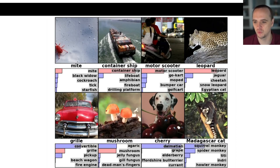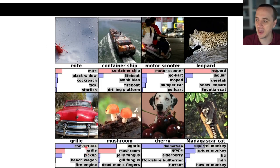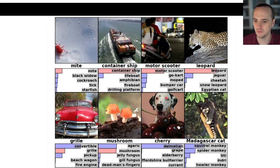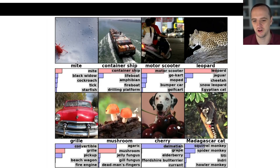Even the ones it got wrong were almost right. For example, the neural net classified an image as a convertible, but the actual human-given label was 'grill' — the front part of the convertible. The actual classification was 'mushroom' but the neural net said 'agaric,' which is a type of mushroom. And there's a literal Dalmatian standing behind a bowl of cherries — the neural net said Dalmatian but the actual answer was cherry. It pretty much got them all right. It said 'squirrel monkey' for a Madagascar cat, and I couldn't tell the difference between the two.